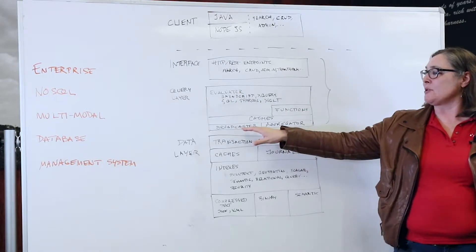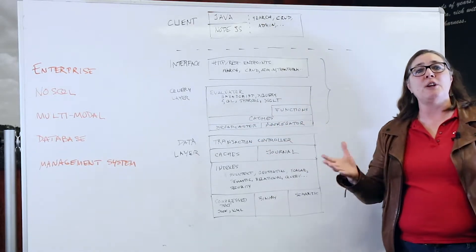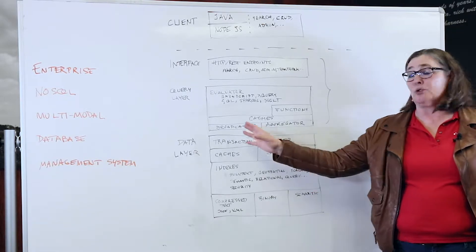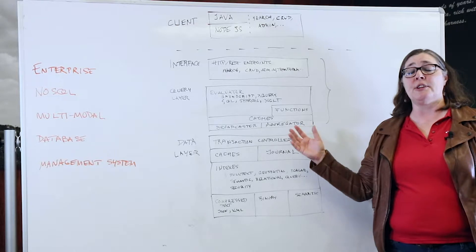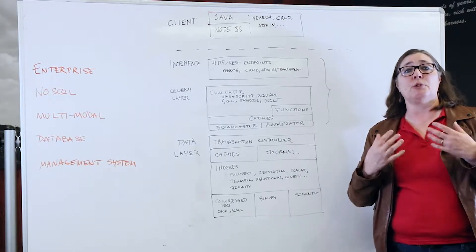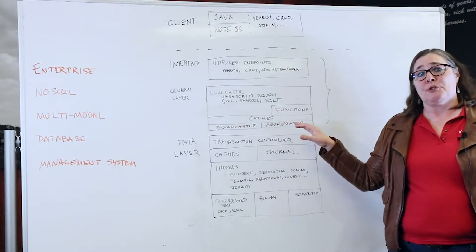Query layer at base has a broadcaster and an aggregator. The broadcaster is federating queries across the cluster and to multiple threads within this one node in the cluster, and the aggregator is consolidating those partial results into a complete result set. You can think of this as map and reduce.